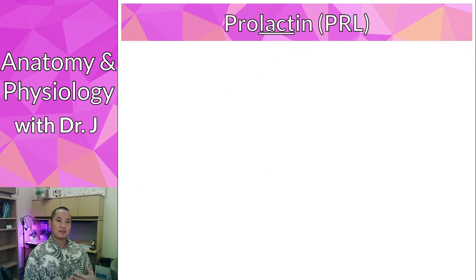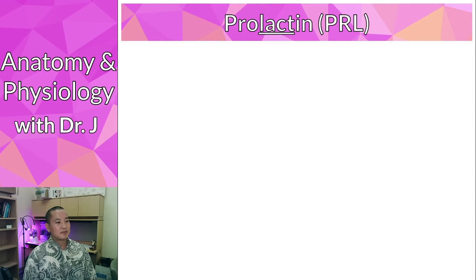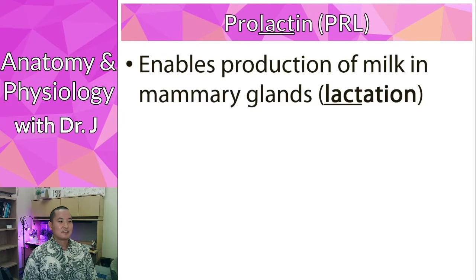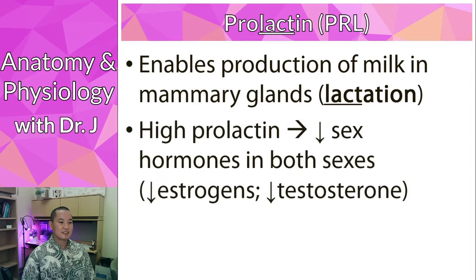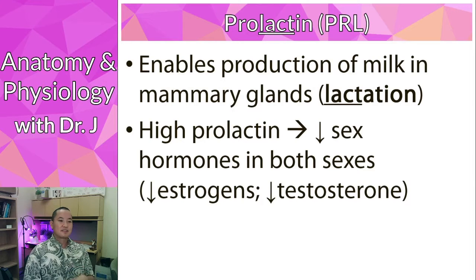So what we have here with prolactin — remember lactation — it enables production of milk in mammary glands, and this is what we call lactation, or galactorrhea if you're talking about the process of lactation. The interesting thing is that if you have abnormal levels of prolactin, this causes problems.